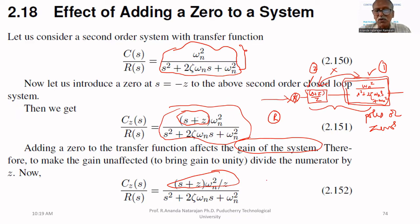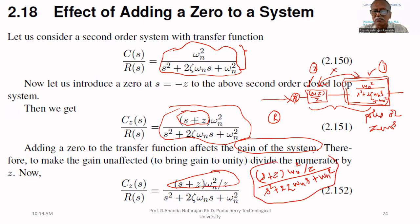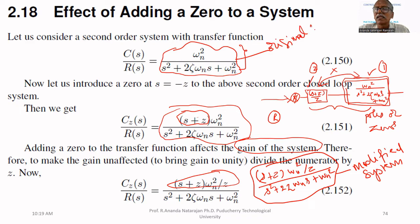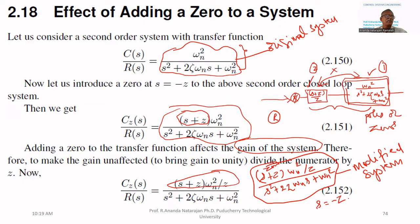Then what happens to the system? The modified system is: (S plus Z) times omega_N squared, all divided by Z, over (S squared plus 2*zeta*omega_N*S plus omega_N squared). This is the modified system. The original system had no zero. In the modified system, a zero is added at S equal to minus Z, where Z may be 1, 2, 3, and so on. A zero is the root of the numerator polynomial.